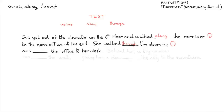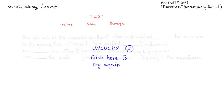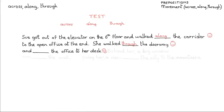And the next one: 'And the office, to her desk' — from one side to the other, that is. Think about that and make your choice. The answer is: across — she walked across the office.